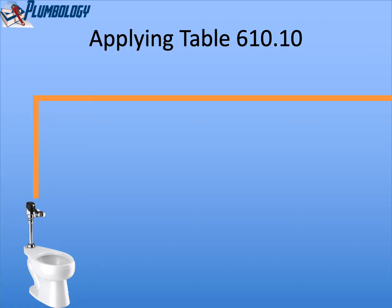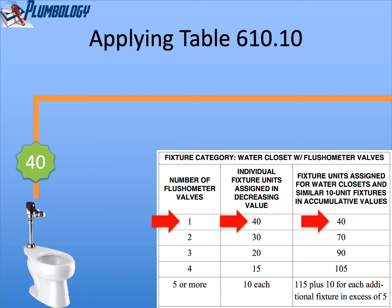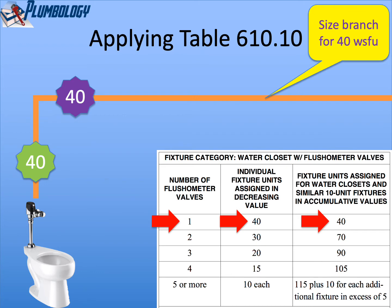Applying table 610.10. We'll start simple with one water closet flushometer valve and only one pipe serving that valve. According to the table, if we have one water closet flushometer valve, that valve needs to be given a value of 40 fixture units. So we write 40 near the flush valve. The water piping serving that flush valve has an accumulative value of 40 fixture units, so the piping would also have 40 fixture units on it. If we were sizing that pipe, we would size that branch for 40 water supply fixture units.